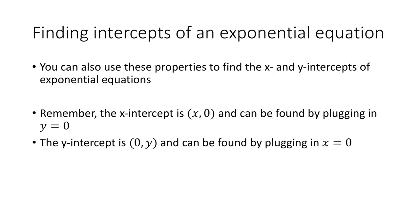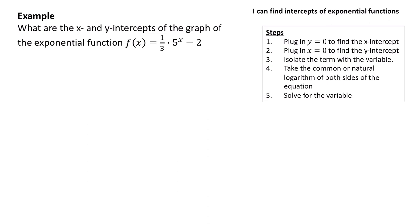We can also use logarithms to find the intercepts of an exponential equation. You can find intercepts by graphing and looking for where the function crosses the x and y axes, or you can find the x-intercept by plugging in y equals 0, and the y-intercept by plugging in x equals 0. Let's find the x and y-intercepts of the exponential function f of x equals one-third times 5 to the x minus 2.